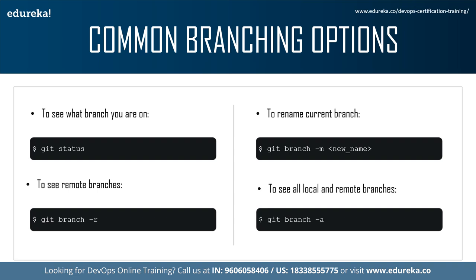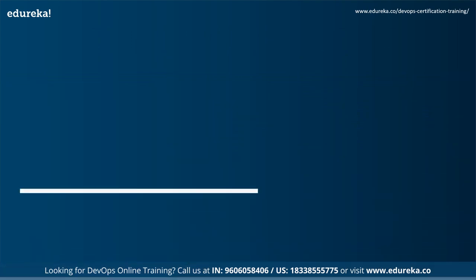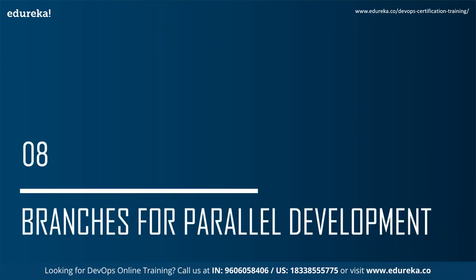To view remote branches, simply pass the -r flag to the git branch command. You can inspect remote branches with the usual git checkout and git log commands. If you want to view both local and remote branches, pass the -a flag to the git branch command to view all of them.